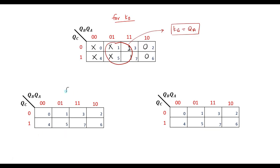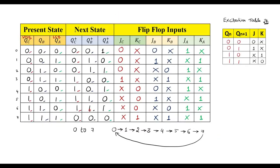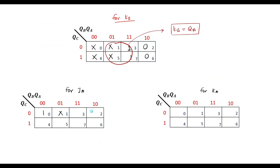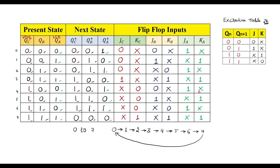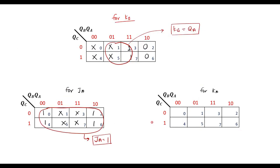Finally, for JA the K-map values are 1, x, 1, x, 1, x, 1, x. Grouping all cells together gives JA = 1, meaning logic high. Similarly for KA the values are x, 1, x, 1, x, 1, x, 1. Grouping all cells gives KA = 1. So all flip-flop input expressions have been derived.